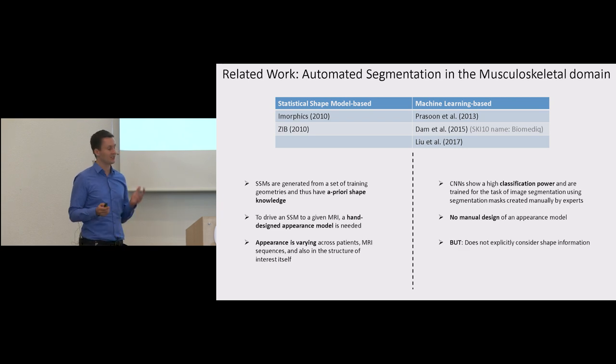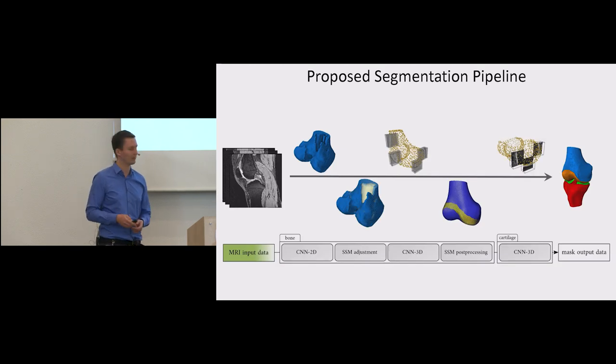On the other hand, machine learning based approaches, often trained end-to-end, need no manual intervention and achieve impressive results. However, they rarely explicitly consider shape information. So the motivation for our segmentation method was to combine statistical shape models and CNNs in a clever way.